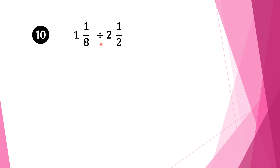Moving on to our last question, question 10. We have 1 and 1 over 8 divided by 2 and a half. Again we convert our mixed fractions into normal fractions. So 8 times 1 is 8, plus 1 is 9, and we write down our denominator 8 as it is. We bring the division sign as it is. For the second fraction: 2 times 2 is 4, plus 1 is 5, and we write down our denominator 2 as it is.